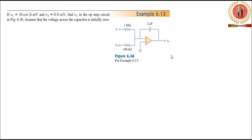V1 is equal to 10 cos(2t) millivolt. V2 is equal to 0.5t millivolt. Find V0 in the open circuit figure 6.36, which shows the voltage across the capacitor. The capacitor is initially 0 — that is, the initial capacitor voltage is 0. This is an integrator circuit.